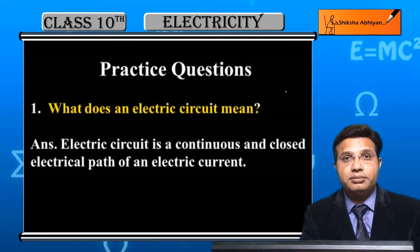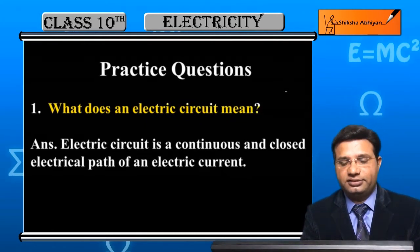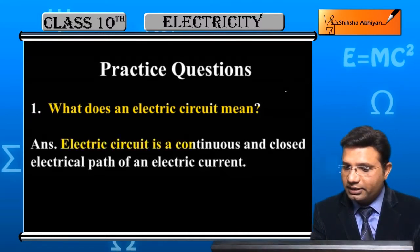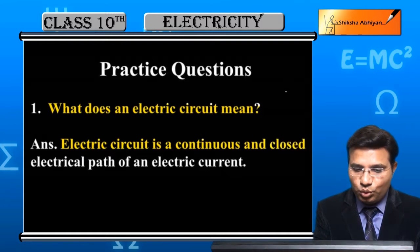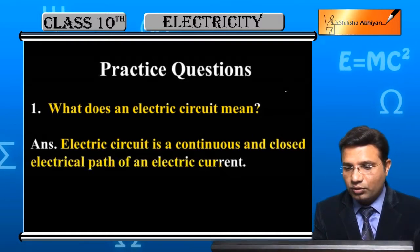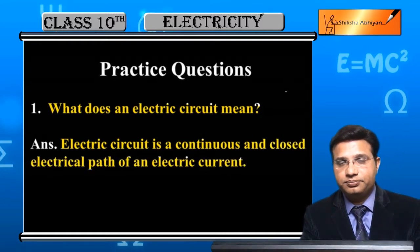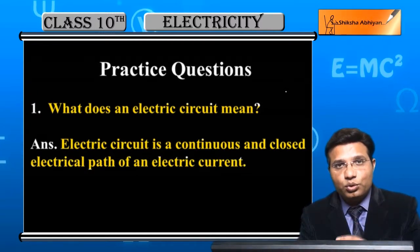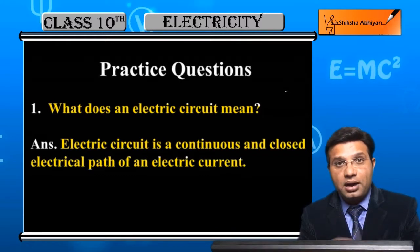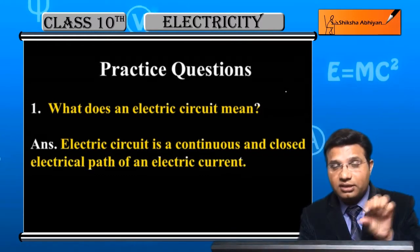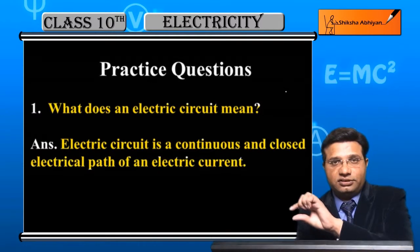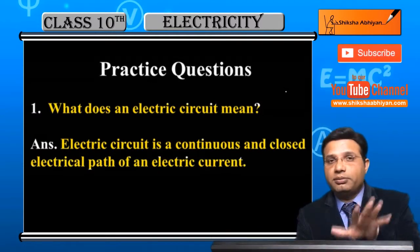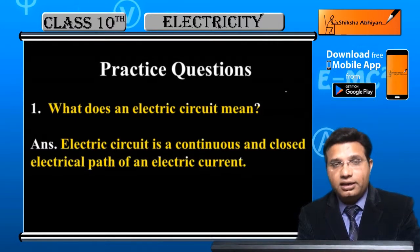What does an electric circuit mean? The definition is: an electric circuit is a continuous and closed electrical path of an electric current. This means the path through which electric current flows forms a closed circuit — that is called an electric circuit.